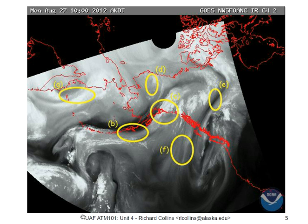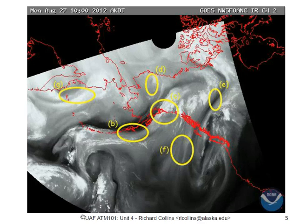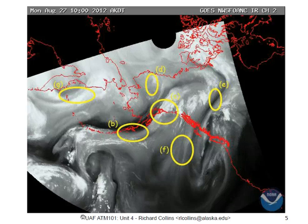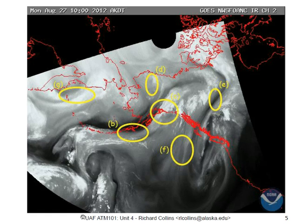In summary, the use of three satellite images provides a more complete picture of what's happening in terms of clouds, cloud height, and water vapor. Where water vapor is at the highest concentrations — the brightest white in the water vapor image — those are the regions where we get the most precipitation. Using the three images together, we can distinguish between thick clouds giving precipitation and thin cirrus ice crystal clouds that are very bright in the visible but are not associated with precipitation.